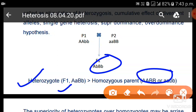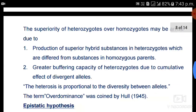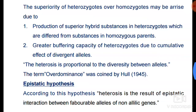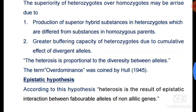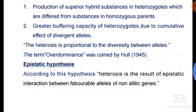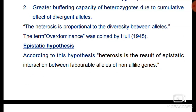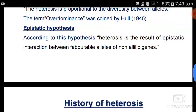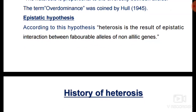The superiority of heterozygous over homozygous may arise due to: first, production of superior hybrid substances in the heterozygous which differ from substances in homozygous parents; and second, greater buffering capacity of heterozygous due to the cumulative effect of divergent alleles — meaning two different alleles. Heterosis is proportional to the diversity between alleles. The term over-dominance was coined by Hull in 1945 — an important question for competitive exams.